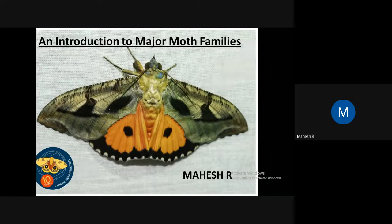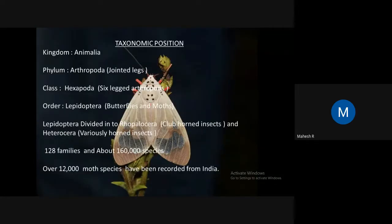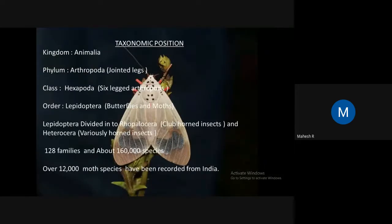I am giving a basic introduction to moth characters, their common families, and some conservation aspects. The taxonomic position: phylum Arthropoda, class Insecta, order Lepidoptera, which includes both butterflies and moths. Lepidoptera is divided into Rhopalocera (butterflies, club-horned insects) and Heterocera (moths, variously-horned insects). Moths belong to 128 families and about 160,000 species worldwide, and already 11 to 15 families are already extinct.